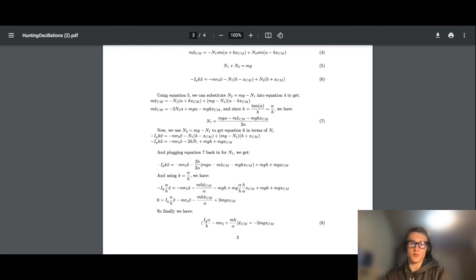In order to obtain a single equation of motion, we manipulate equations 4 through 6 as follows. First, we use equation 5 to get equation 4 in terms of only n1, and then solve for n1 to get equation 7. Next, we write equation 6 in terms of n1, and now we plug in equation 7, and we go through a few steps of simplification. Eventually, we are left with equation 8.